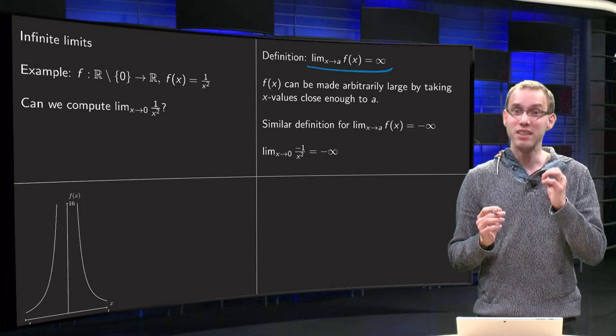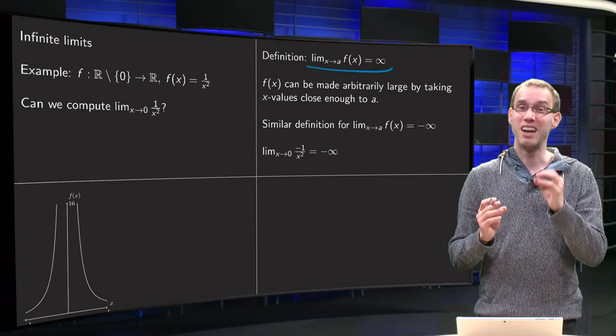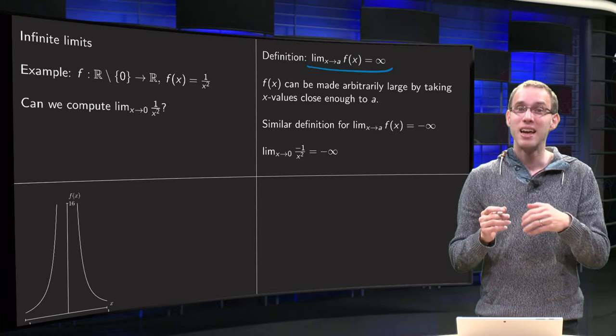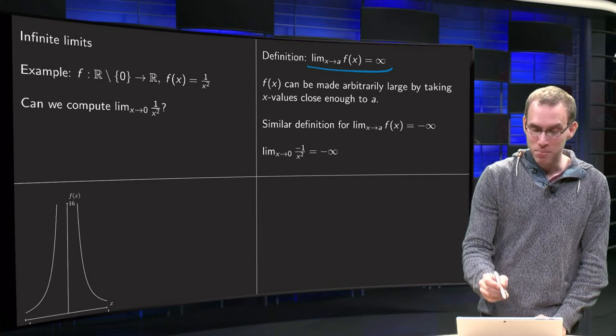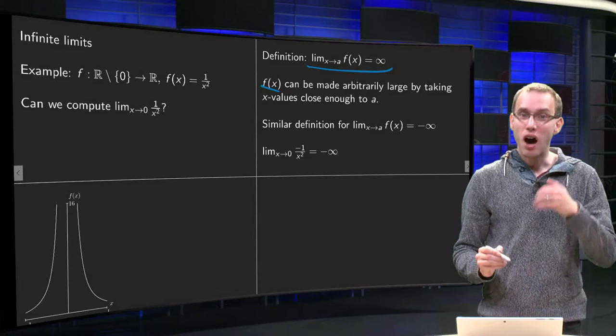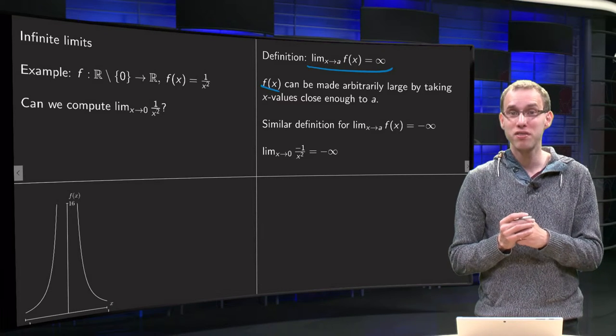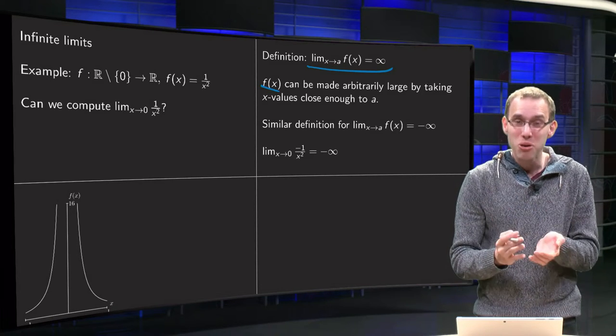Be careful here, infinity is not a real number. If you write this, what does it mean? Then that means that we can make f of x arbitrarily large and positive if you take x close enough to a.